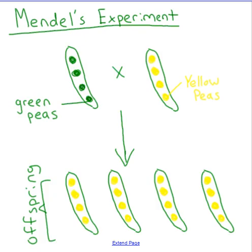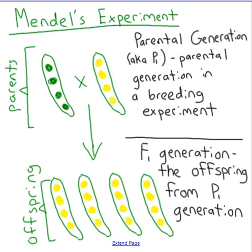Getting into his actual experiment: he looked at all of these traits, and we'll start with yellow peas versus green peas, where yellow is dominant to green. He took two purebred homozygous pea plants — big Y, big Y crossed with little y, little y — and what he saw in the offspring was all yellow pea plants. From here on, we'll call the first generation the parental generation, or P1, and the offspring the F1 generation.